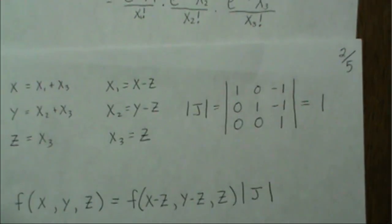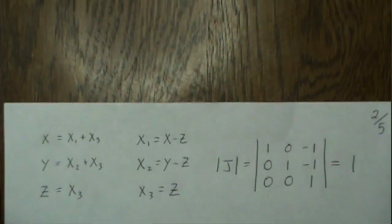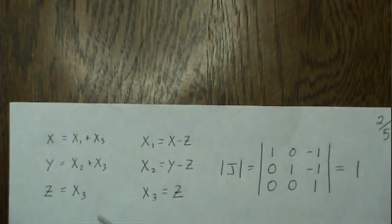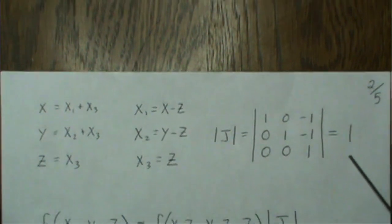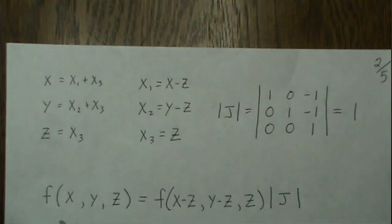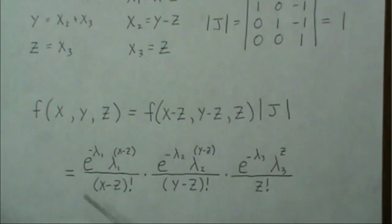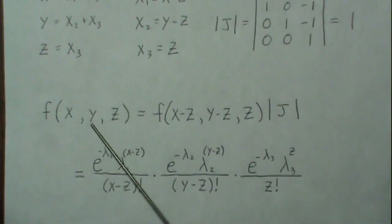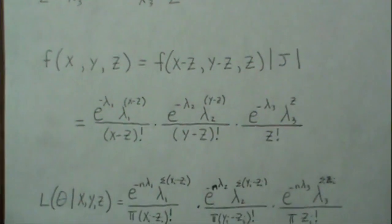We do that by a linear transformation. We let X be X1 plus X3, Y be X2 plus X3, and Z be X3. Then we back-solve for X1 and X2. The absolute value of the determinant of the Jacobian equals 1. Then the joint density of X, Y, Z is this, and we plug those in to get this. So this is what we'll use for the EM algorithm — here we have observable and unobservable variables, so now we can split them.